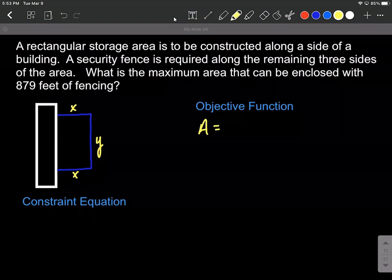Our constraint equation has to do with this 879 feet of fencing. That's like the perimeter of this fence. So if we add up all the side lengths, we get two X's plus a Y is going to make up all the fencing that we need.